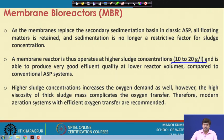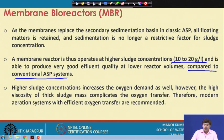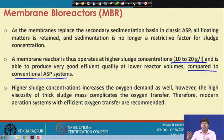When operated at higher sludge concentration, the system produces very good effluent quality even at lower reactor volumes. Performance is actually better than conventional activated sludge systems. Higher sludge concentration is the main reason — if there is a lot of biomass, they will quickly degrade the organic matter present in the system, and the rate of organic matter decomposition will be higher, enabling greater BOD and organic carbon reduction.